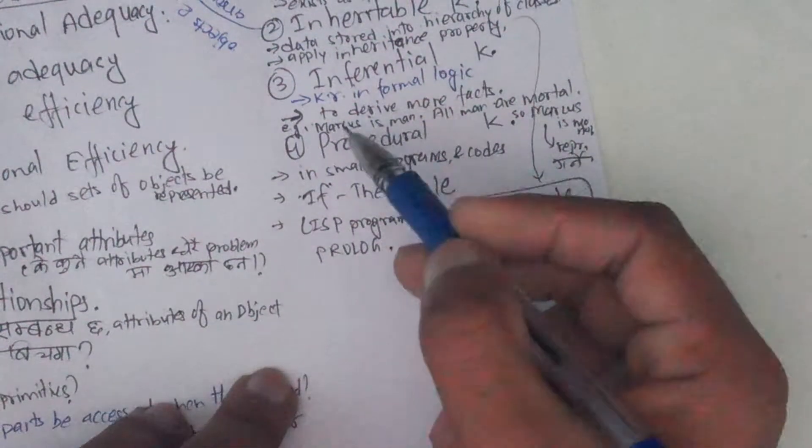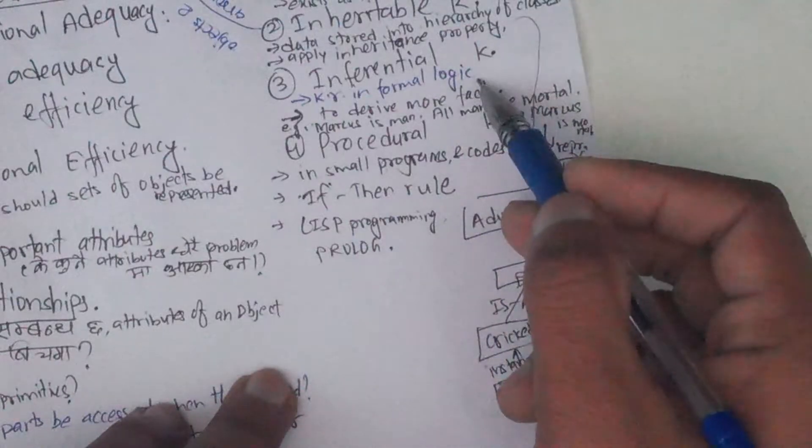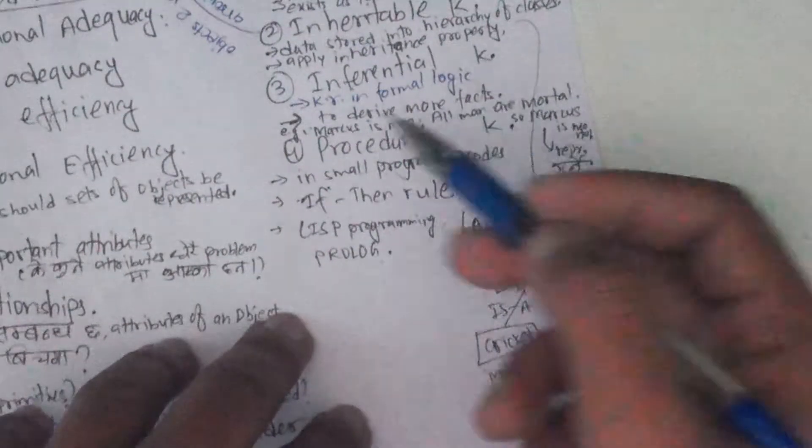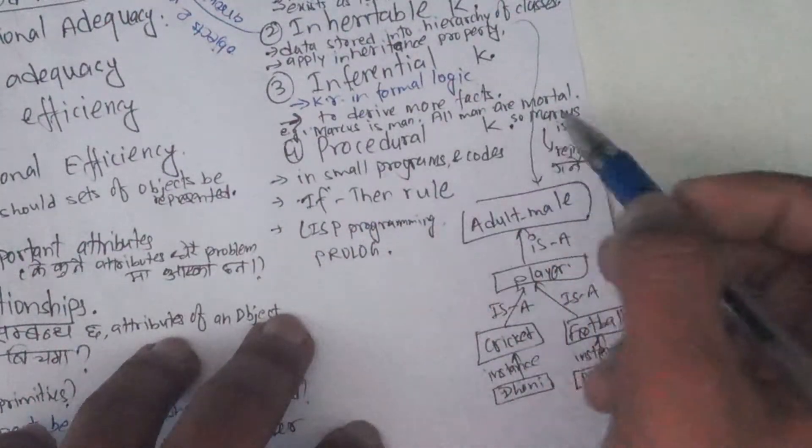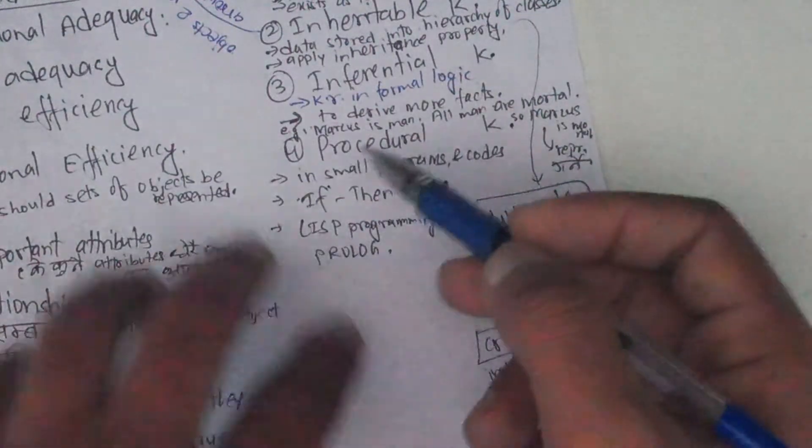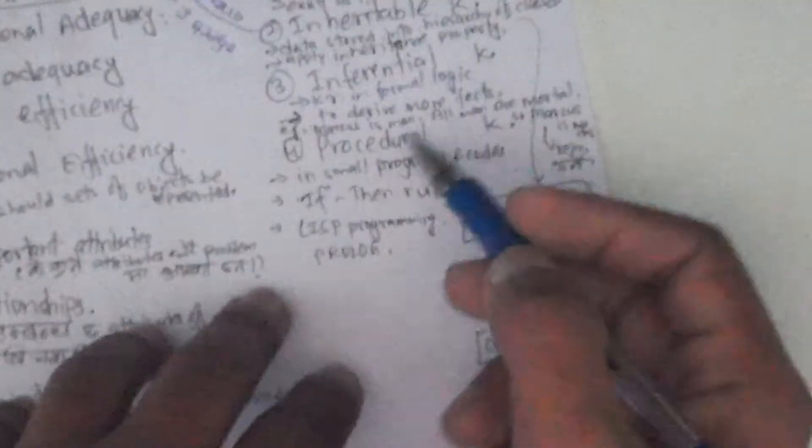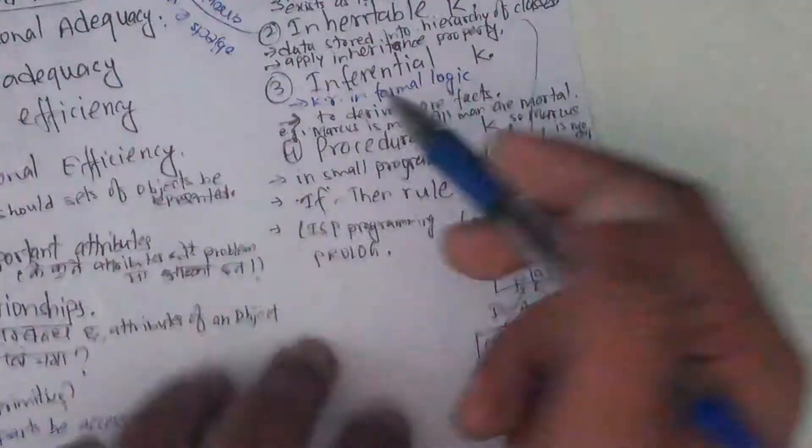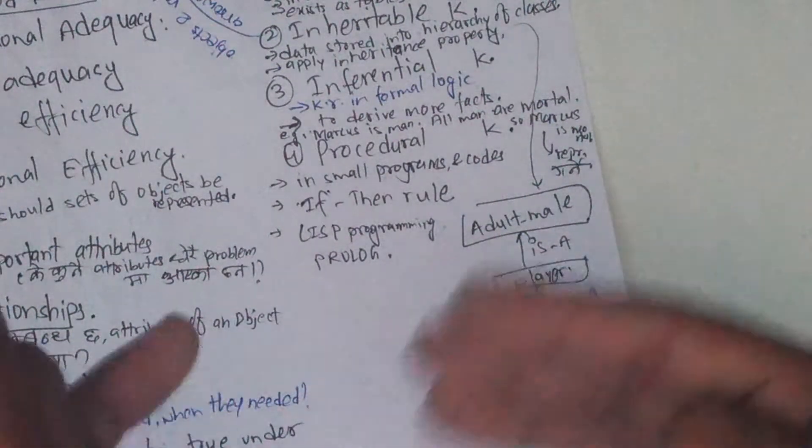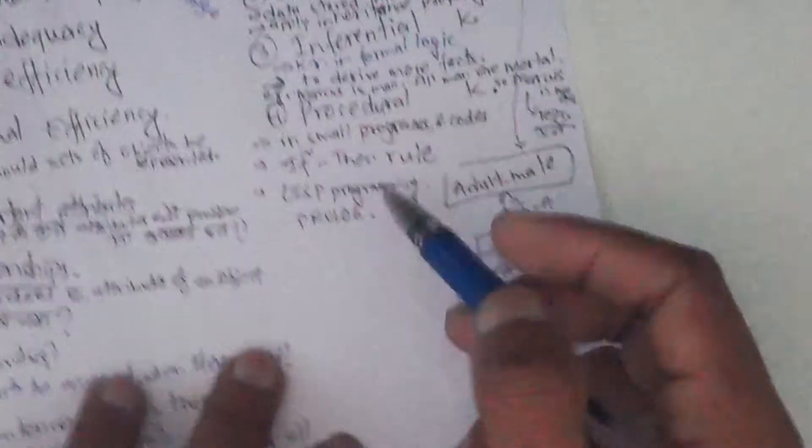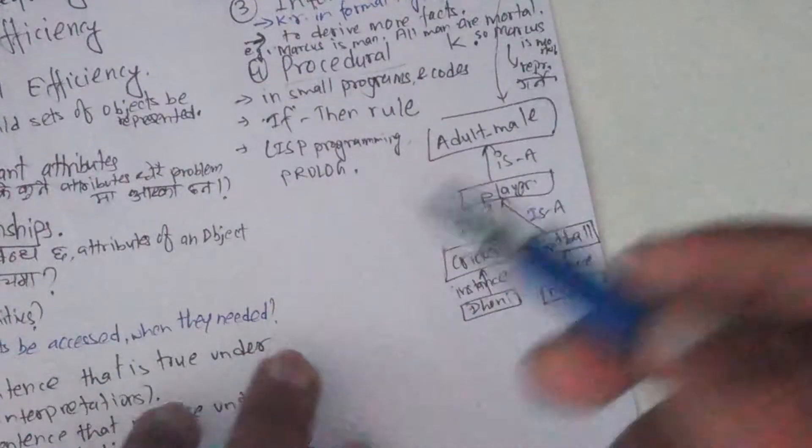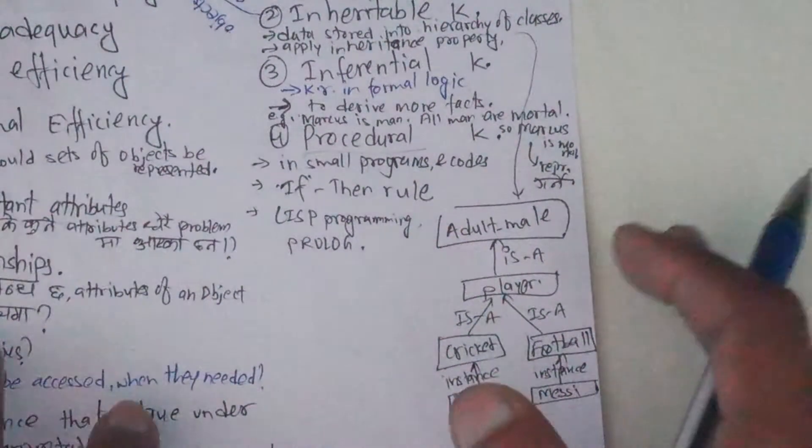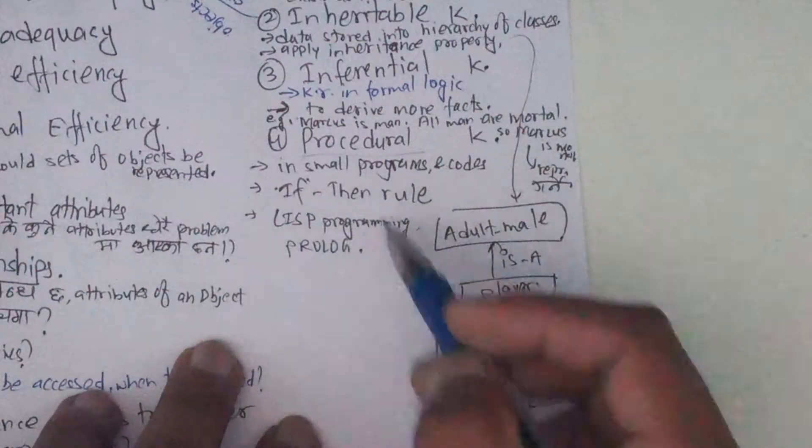Inferential knowledge - knowledge representation in formal logic. Formal logic is the basis to derive more facts. It is useful, like Marcus is a man, all men are mortal, so Marcus is mortal. List processing programming like LISP and Prolog process knowledge more.